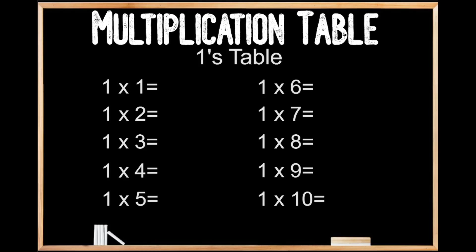1's table. 1 times 1 is 1. 1 times 2 is 2. 1 times 3 is 3. 1 times 4 is 4. 1 times 5 is 5. 1 times 6 is 6. 1 times 7 is 7. 1 times 8 is 8. 1 times 9 is 9. And 1 times 10 is 10.